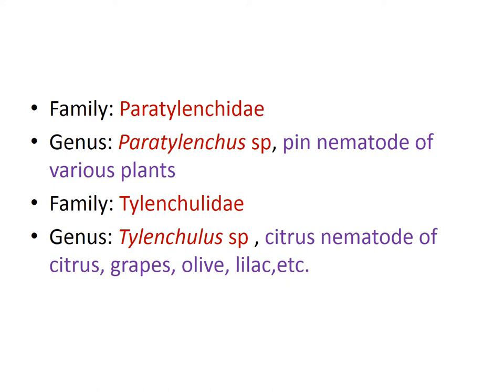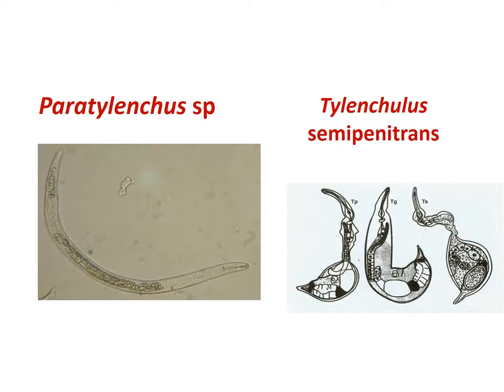The next family is Paratylenchidae — Paratylenchus species is the pin nematode of various plants. Another family is Tylenchulidae — Tylenchulus species, that is Tylenchulus semipenetrans, the citrus nematode. Tylenchulus semipenetrans is a citrus nematode of citrus, grapevine, and lilac. It is a semi-endoparasitic nematode. The first diagram shows juveniles of Paratylenchus species, and the next one is Tylenchulus semipenetrans, the citrus nematode.